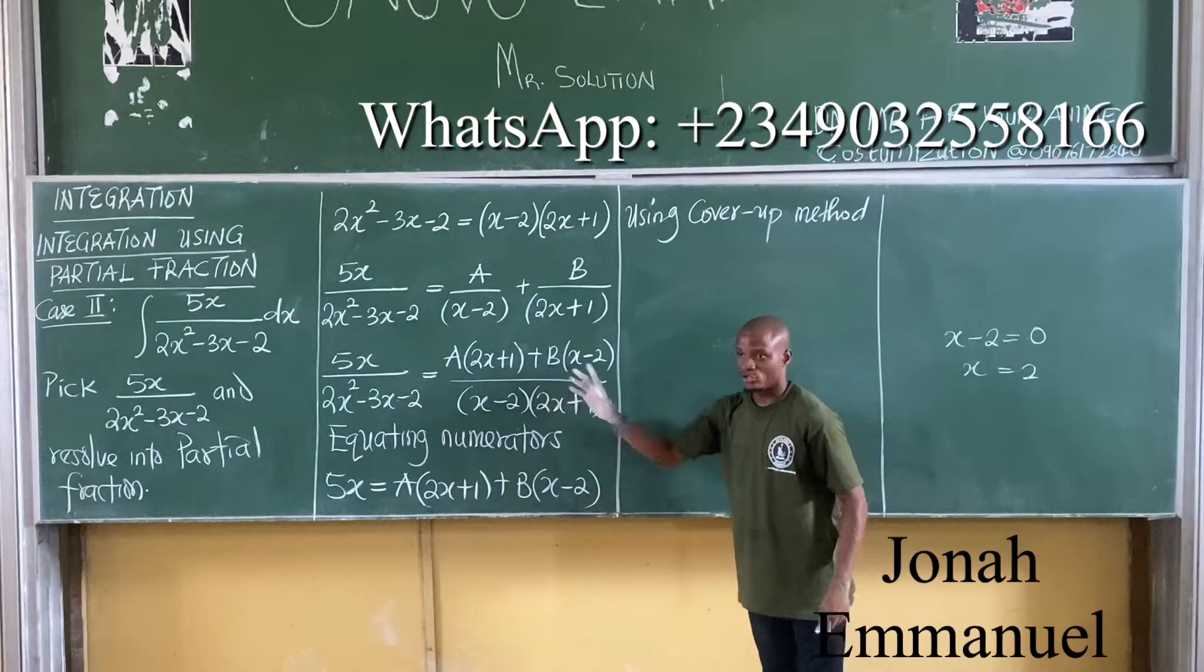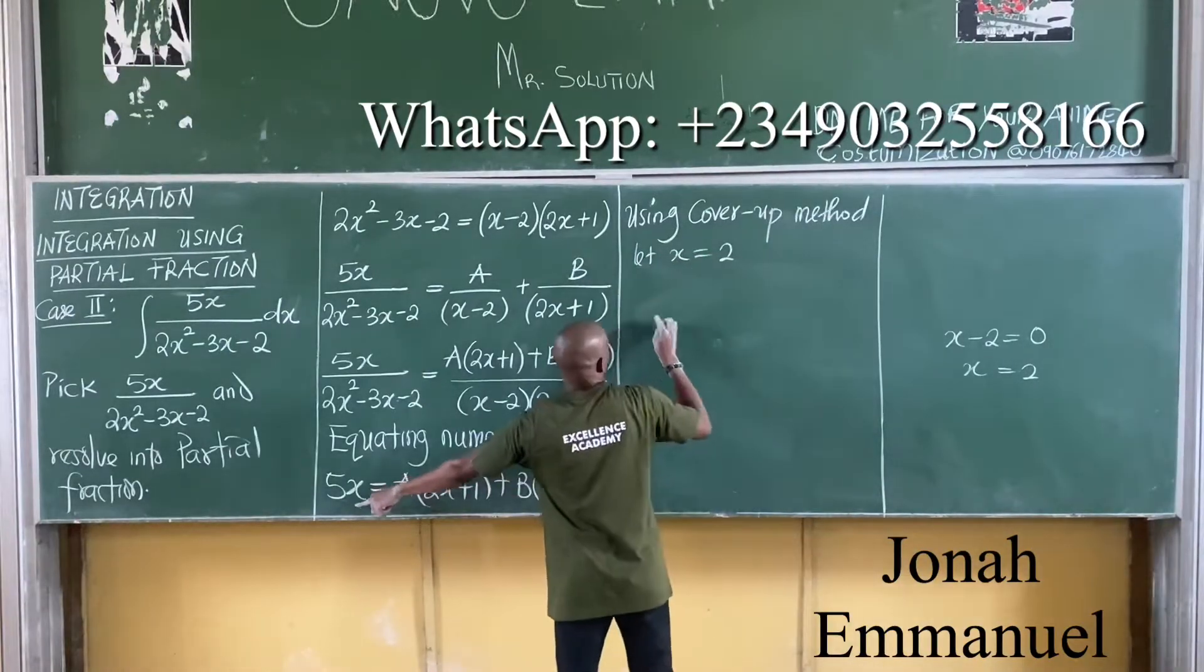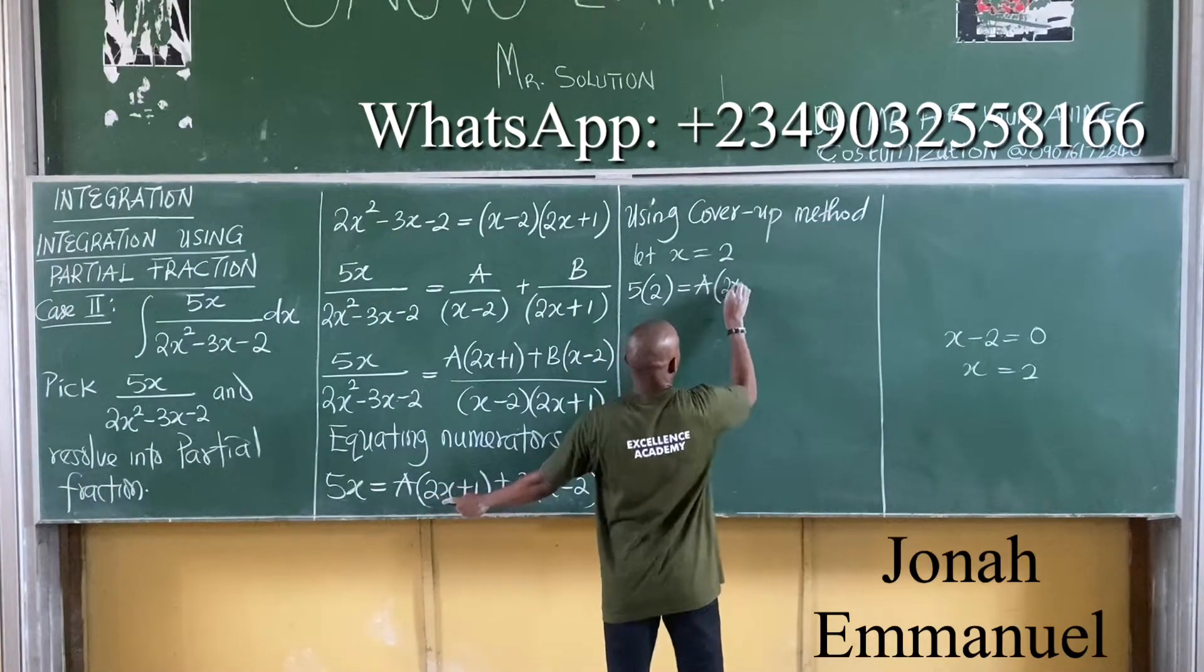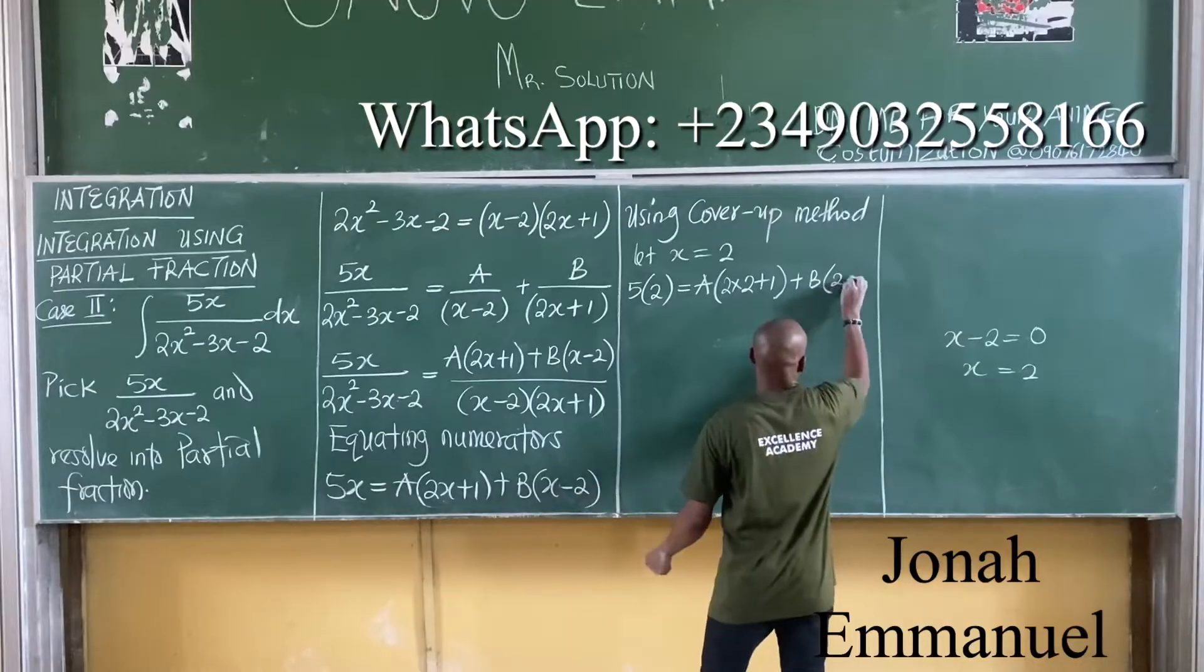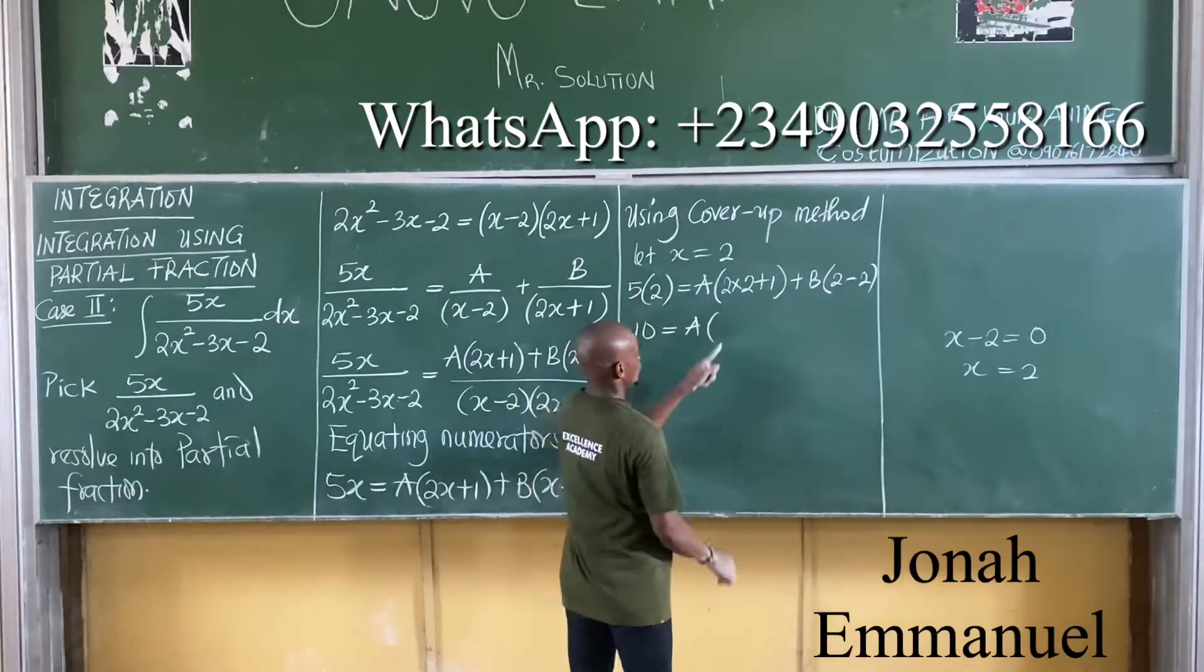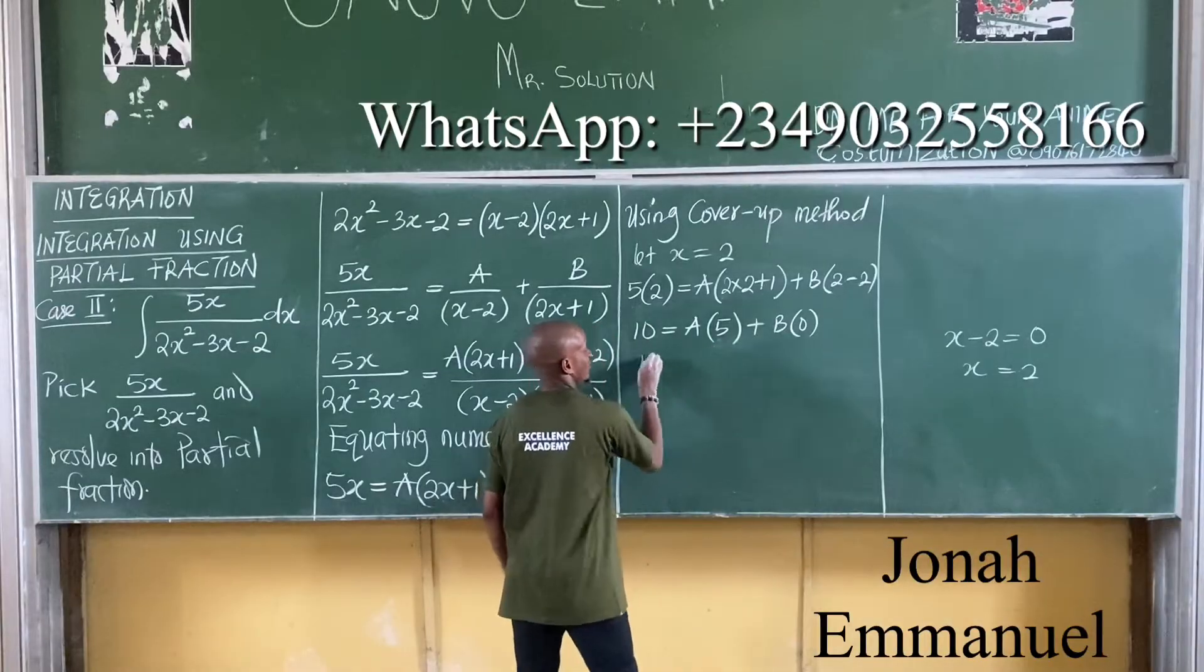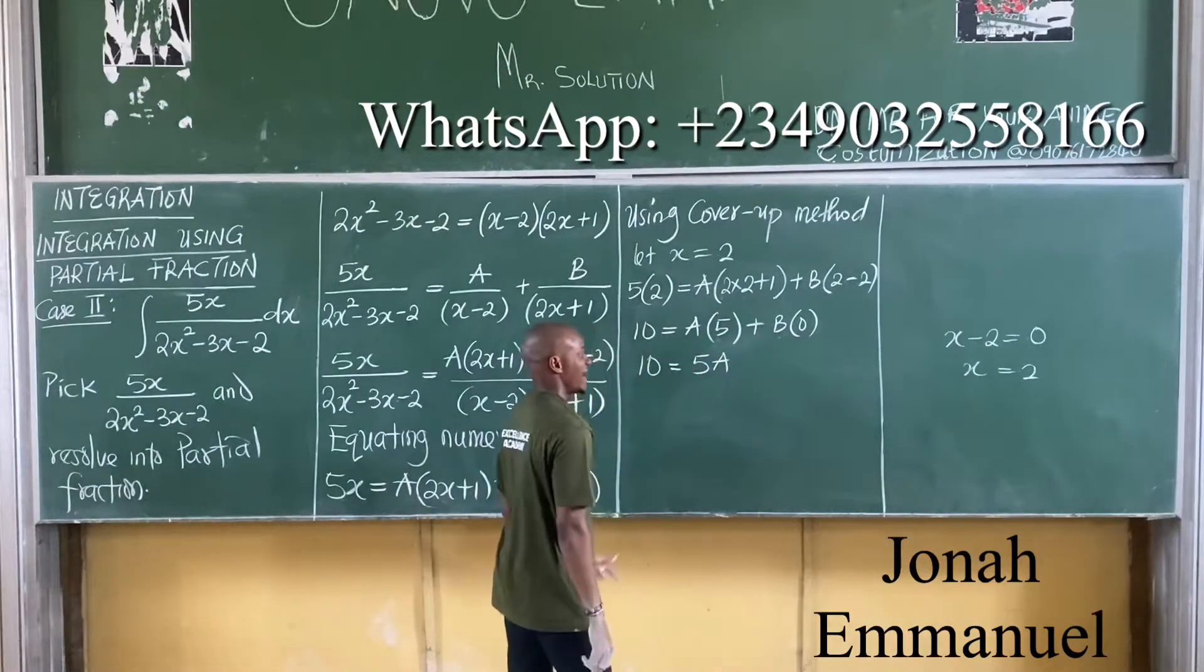So this now becomes, if I put x as 2 into this, this becomes 5 times 2 is equal to A into 2 times 2 plus 1 plus B into 2 minus 2. What do I have? 5 times 2 is 10 is equal to A into 2 times 2 is 4 plus 1, that's 5, plus B into 2 minus 2 is 0. From here, I can say that 10 is equal to 5A. B times 0 is 0. I can simply get A here.